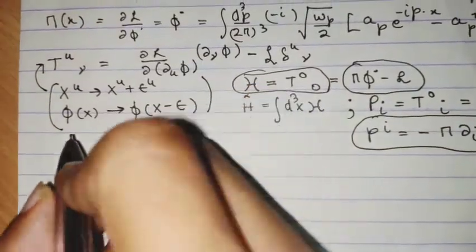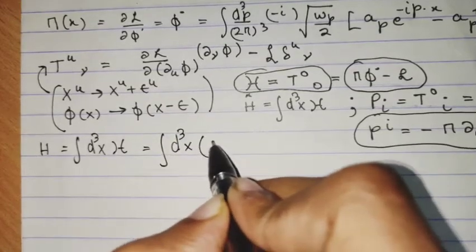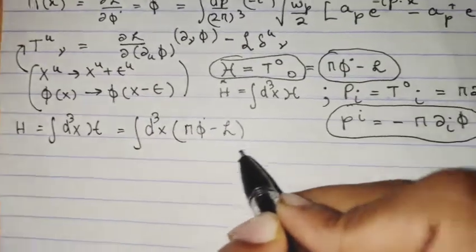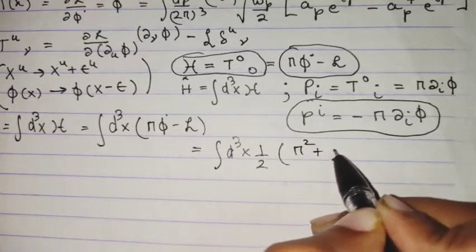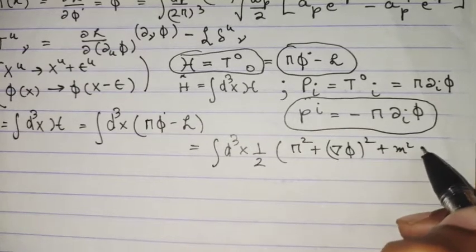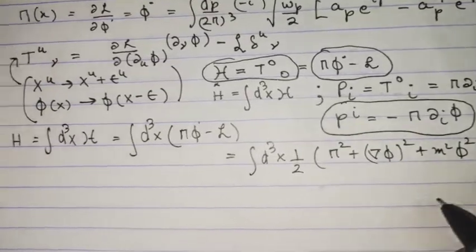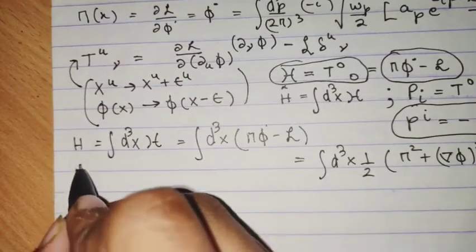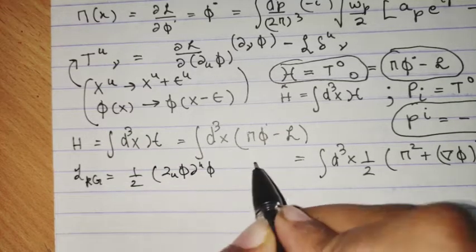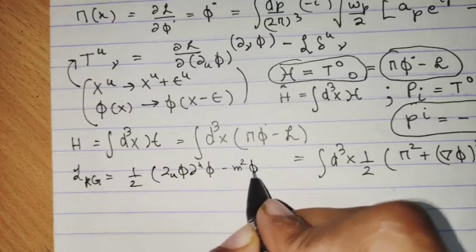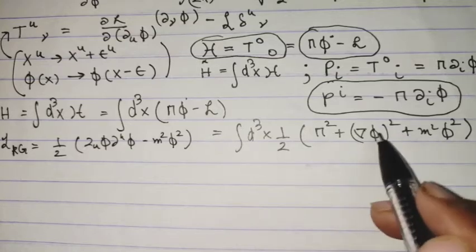All we need to do is calculate this by putting these operator forms in terms of these mode expansions. The Hamiltonian is ∫d³x H = ∫d³x (π φ̇ − L), which is finally equal to ∫d³x times (1/2)(π² + (∇φ)² + m²φ²). Once we know the form of the Lagrangian we can find this. The Klein-Gordon Lagrangian is L_KG = (1/2) ∂^μφ ∂_μφ − (1/2)m²φ².